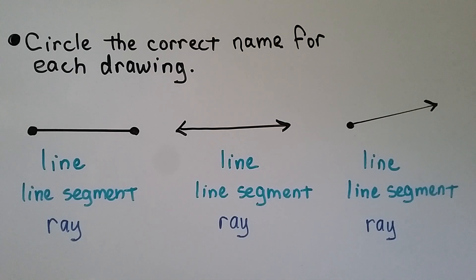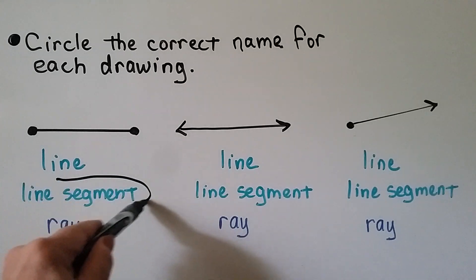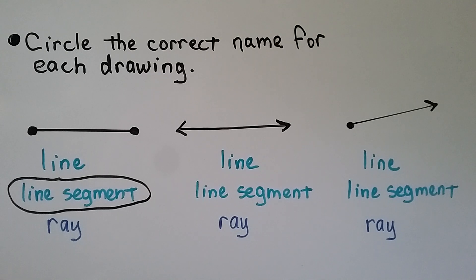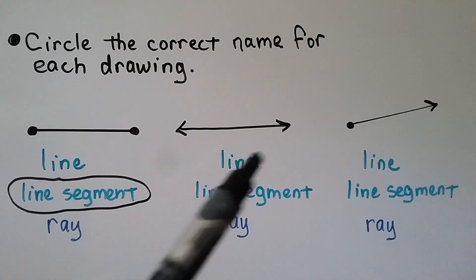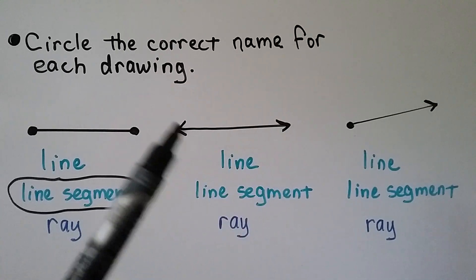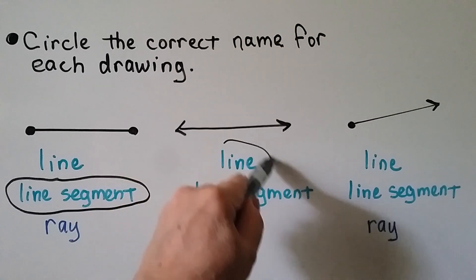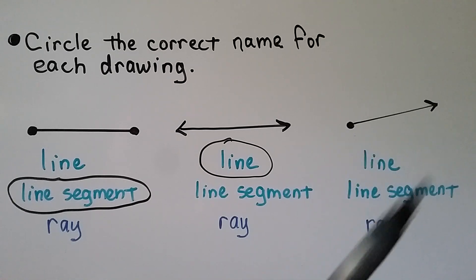Circle the correct name for each drawing. Do you know what this is? It's straight and it's got a point on each end — if you said line segment, you're right. It's part of a line and it has two endpoints. What about this one — is it a line, a line segment, or a ray? It's got arrows on each side, so if you said line, you're right. And what is this one? It's got one endpoint and an arrow going off in one direction — if you said ray, you're right.